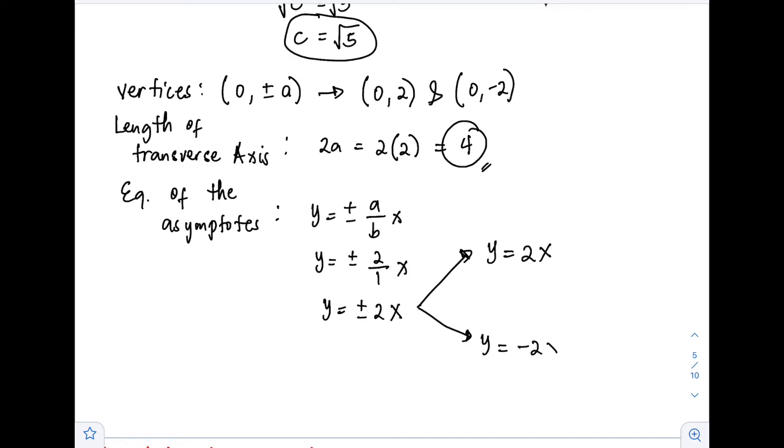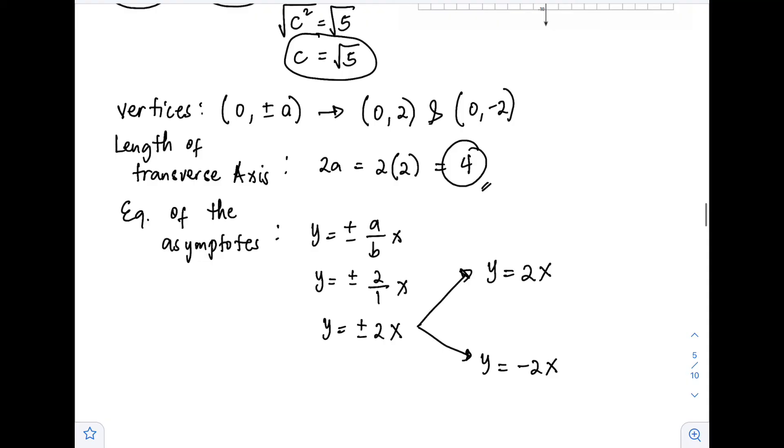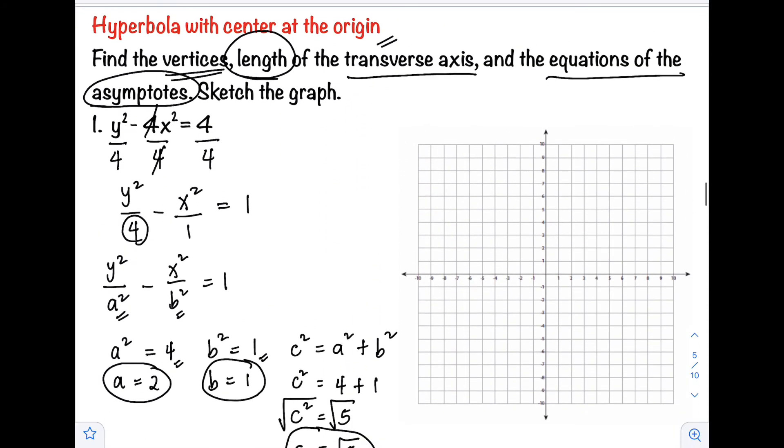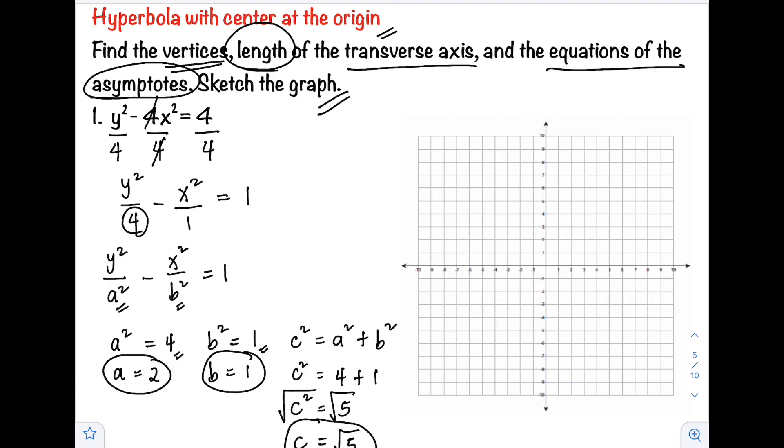After we get all the required parts of the hyperbola, we are asked to graph it. To graph, the shortcut method I'll teach you: since the center of our hyperbola is at the origin, we'll use our value a equals 2.